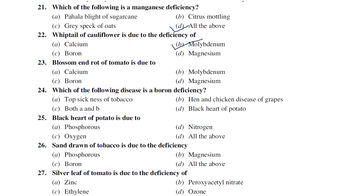Blossom end rot of tomato is due to calcium deficiency. This applies to blossom end rot of fruits and vegetables like tomato and apple — it is caused by calcium deficiency.